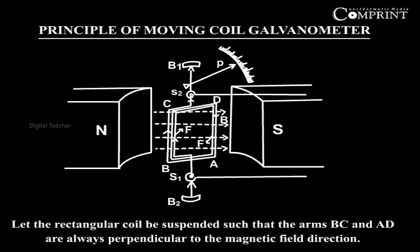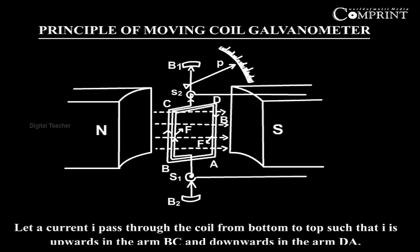Let the rectangular coil be suspended such that the arms BC and AD are always perpendicular to the magnetic field direction. Let a current I pass through the coil from bottom to top such that I is upwards in the arm BC and downwards in the arm DA.